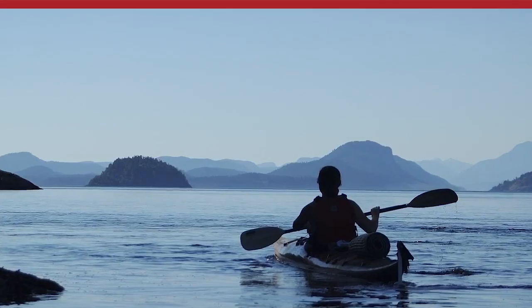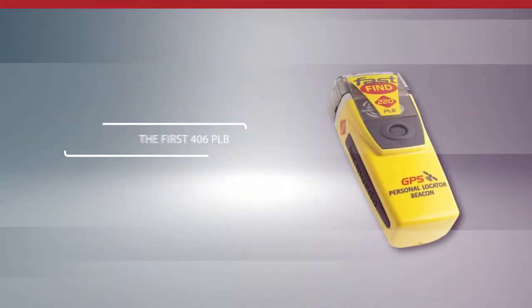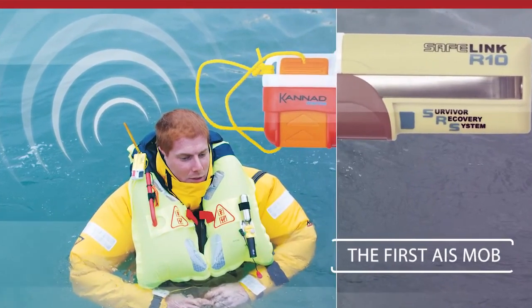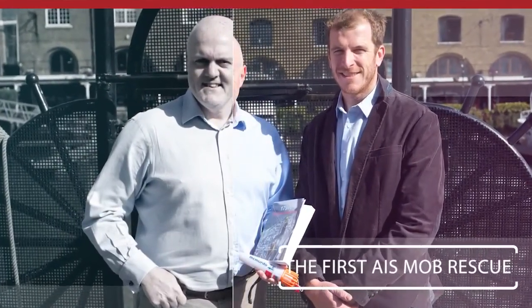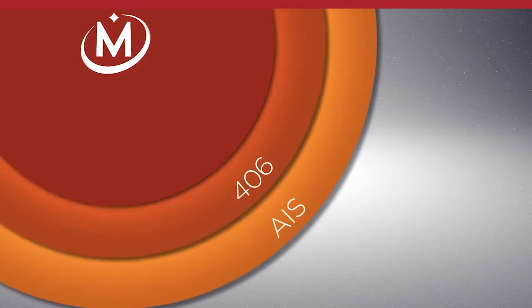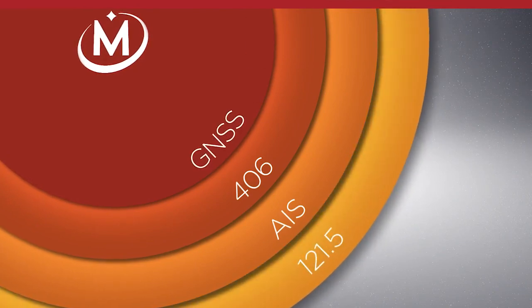McMurdo has a long heritage of innovation. The first 406 PLB. The first AIS MOB. The first AIS MOB rescue. And now, the first convergence of AIS and 406. The first EPIRB with four search and rescue frequencies.